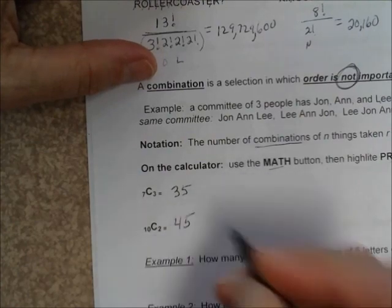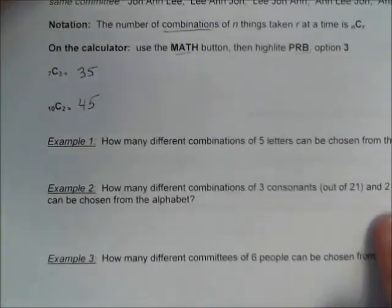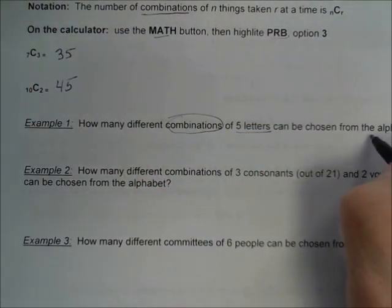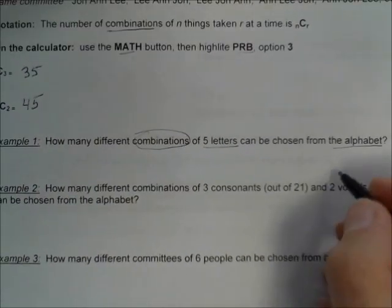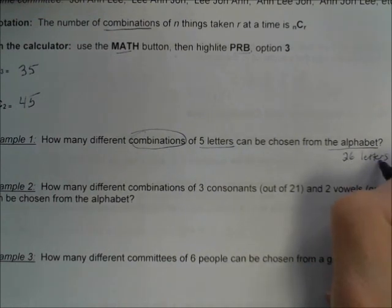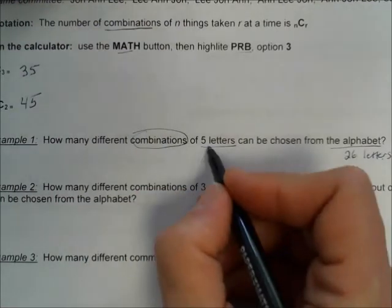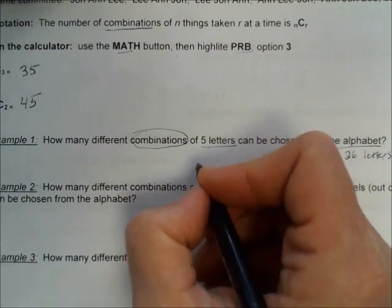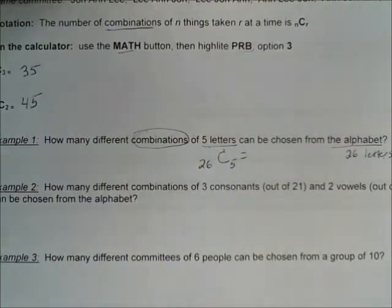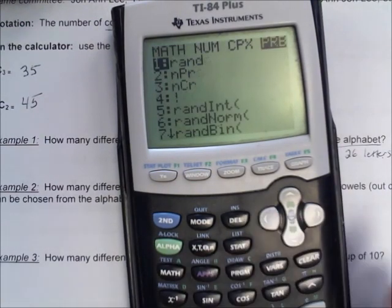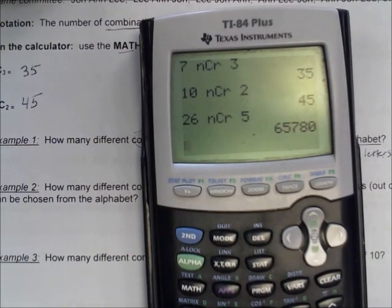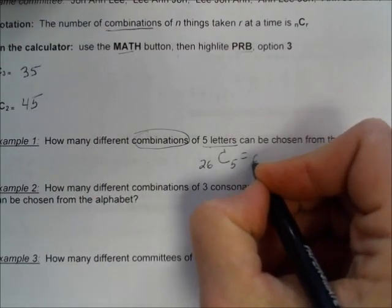So if you want to go through an example — how many different combinations of five letters can be chosen from the alphabet? The alphabet has 26 letters, so that's how many objects we have. We're choosing five letters from 26. So we just do 26, math, PRB, option 3, and choose 5. We have 65,780 different combinations.